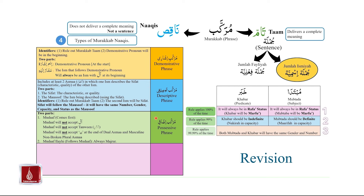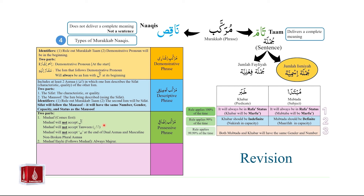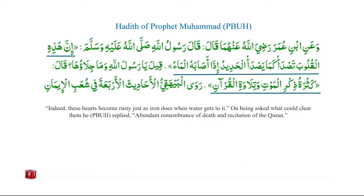Then we studied Murakkab Izafi or possessive phrase. Murakkab Izafi has two parts: Mudhaaf and Mudhaaf Ilai. Mudhaaf comes first in the Murakkab, and Mudhaaf Ilai follows the Mudhaaf. Rules that apply to Mudhaaf: Mudhaaf will not accept Al, will not accept Tanween, and will not accept Noon at the end of dual Asma and masculine non-broken plural Asma. The only rule that applies to Mudhaaf Ilai is that it will always be Majroor. The following is a hadith of Prophet Muhammad, peace be upon him: 'Indeed, these hearts become rusty just as iron does when water gets to it.' On being asked what could clear them, he replied: abundant remembrance of death and recitation of the Quran.